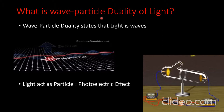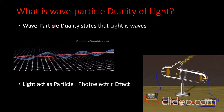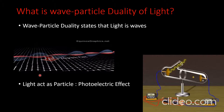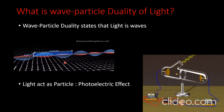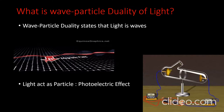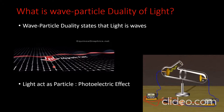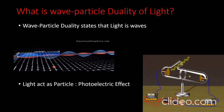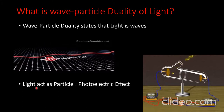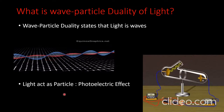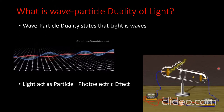Wave-particle duality of light states that light is an electromagnetic wave, having electric field and magnetic field components that are perpendicular to each other and to the direction of motion. But light can also act as a particle. The photoelectric effect tells us about the particle properties of electromagnetic waves.